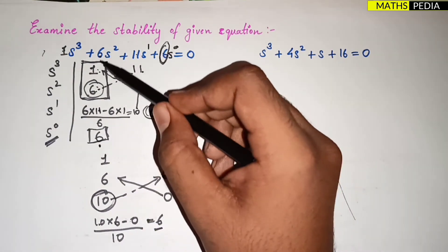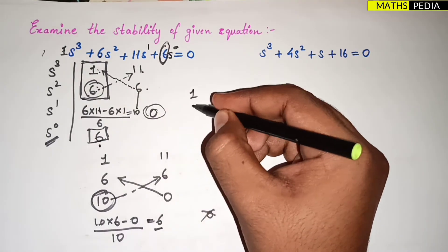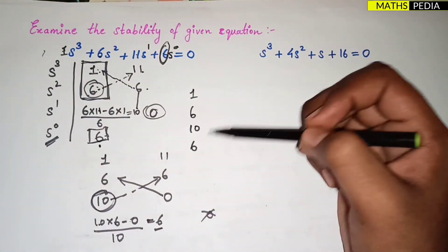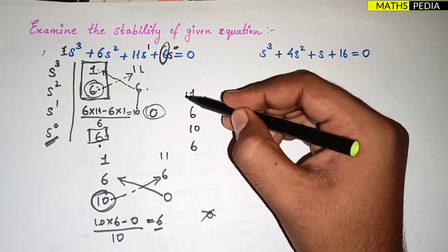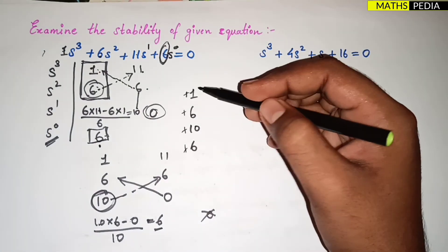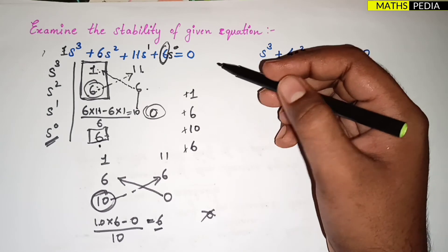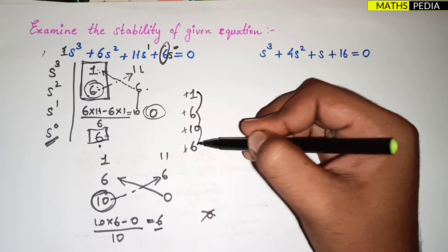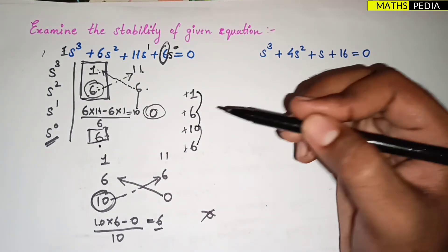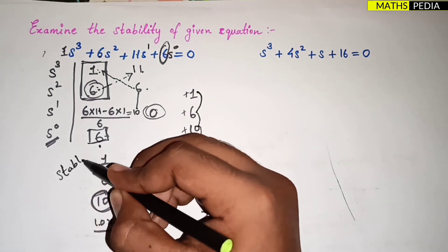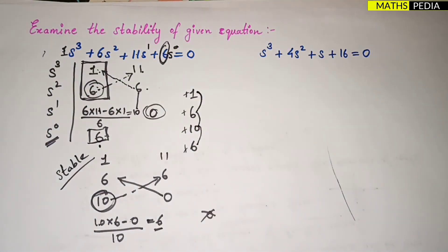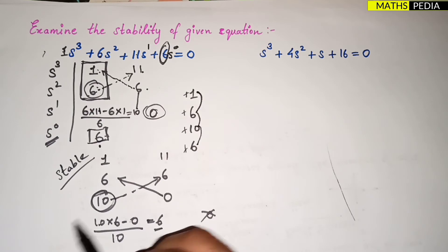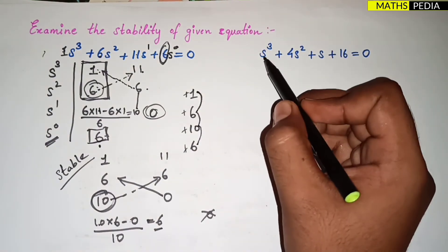Now check the first column of the Routh array: 1, 6, 10, 6. All elements are positive — positive, positive, positive, positive. There is no sign change, so we can directly conclude that the system is stable.